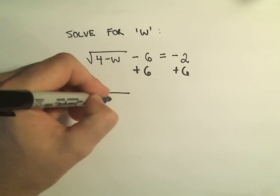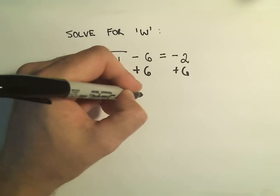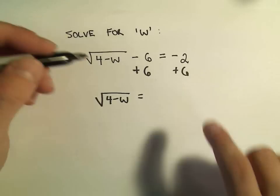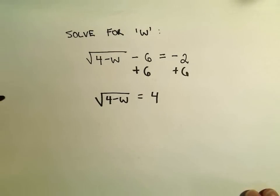On the left I'll have the square root of 4 minus w. On the right side, negative 2 plus 6 is going to give me positive 4.